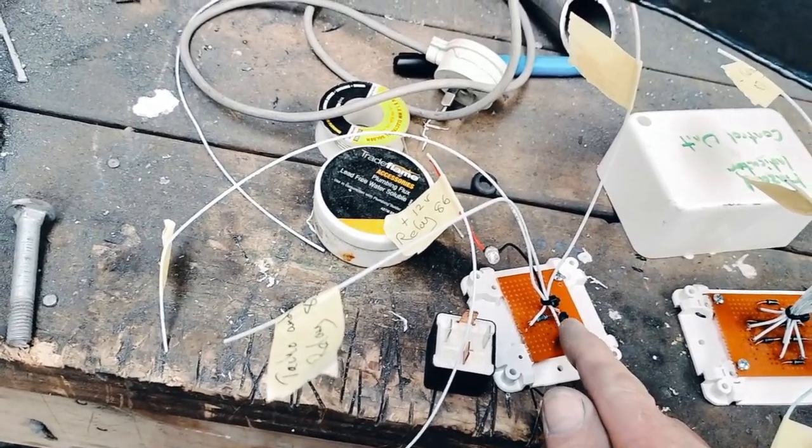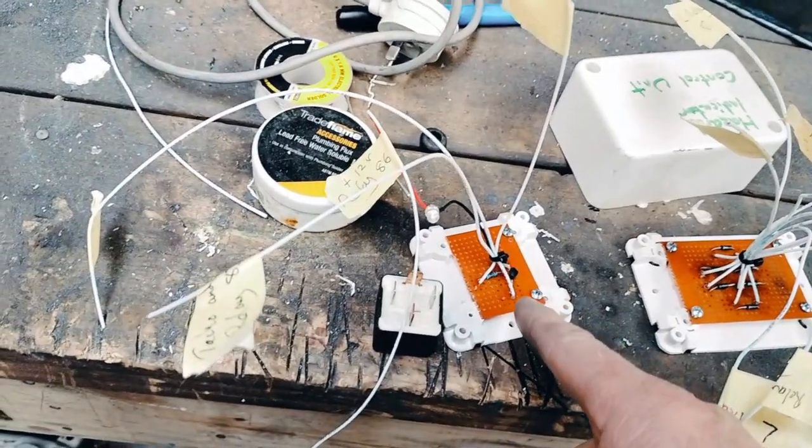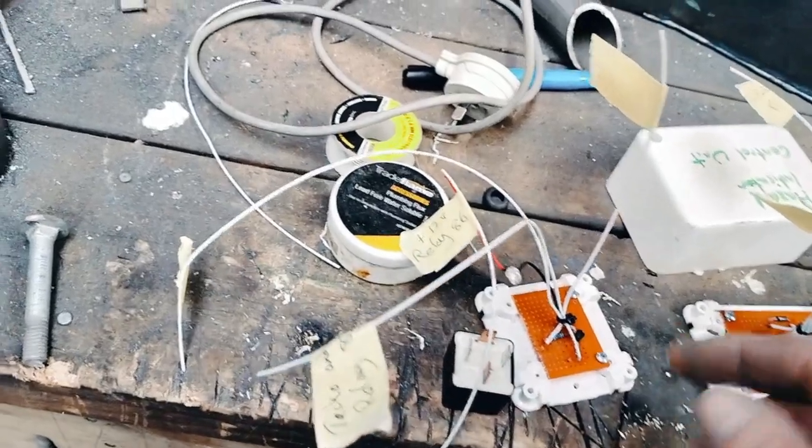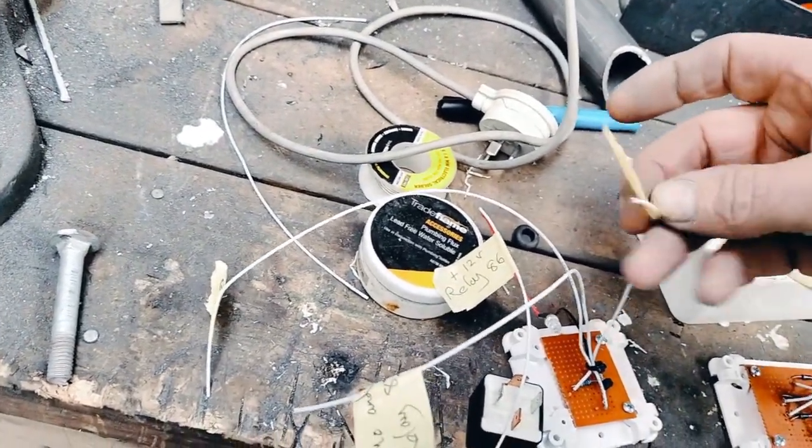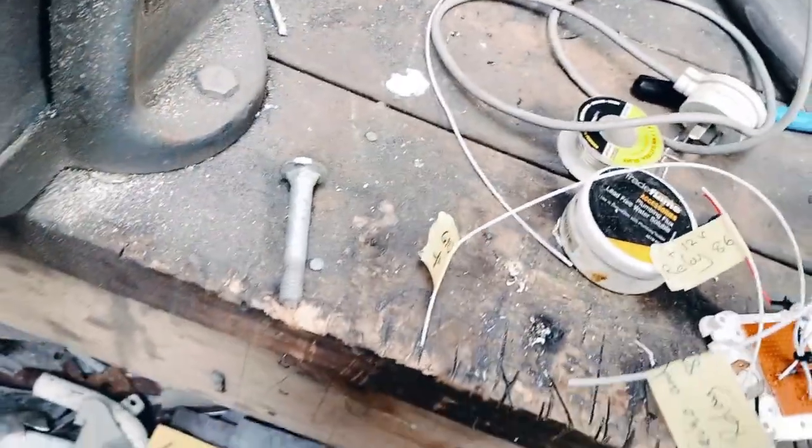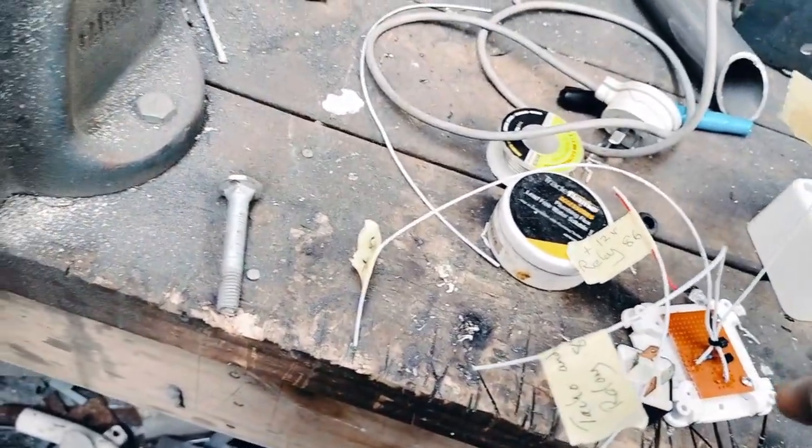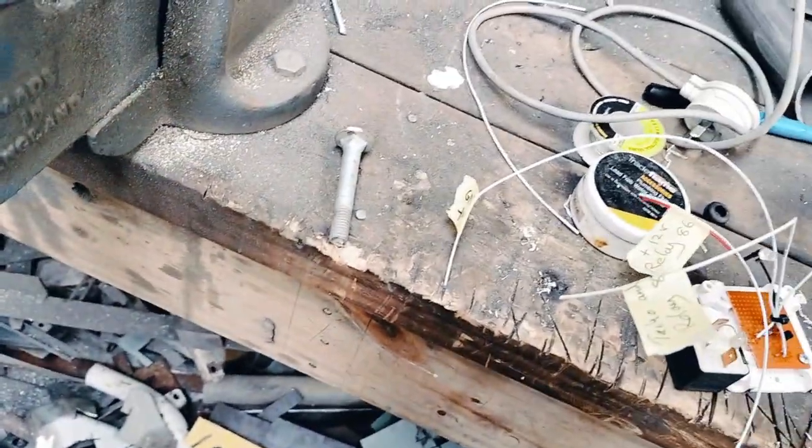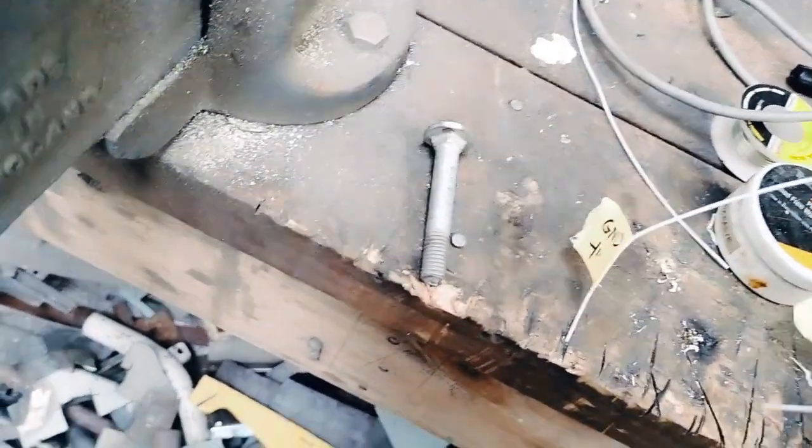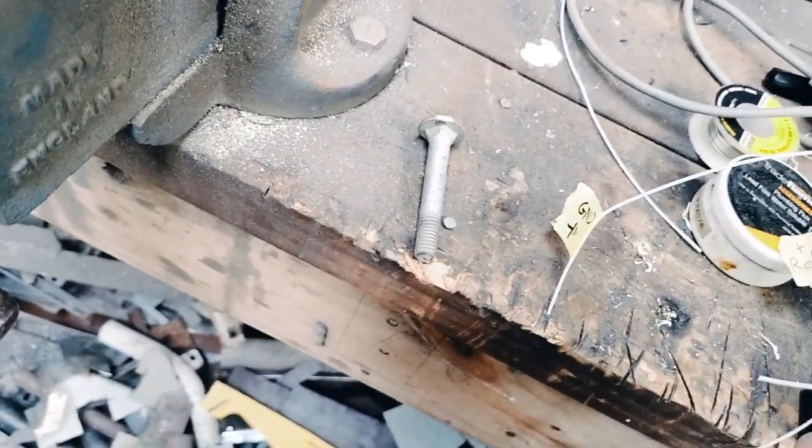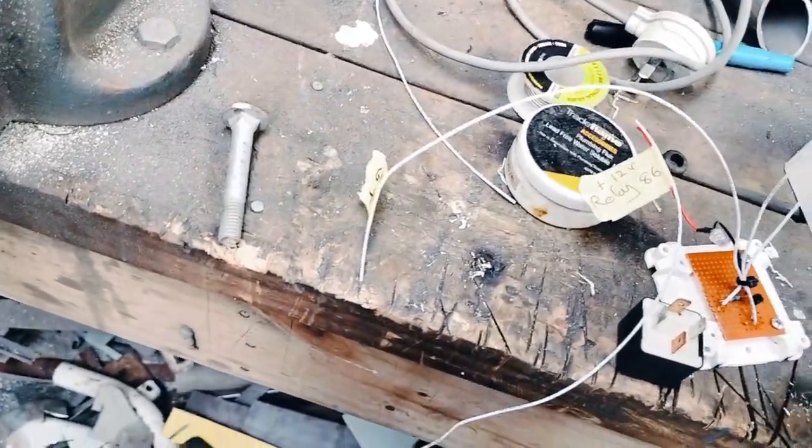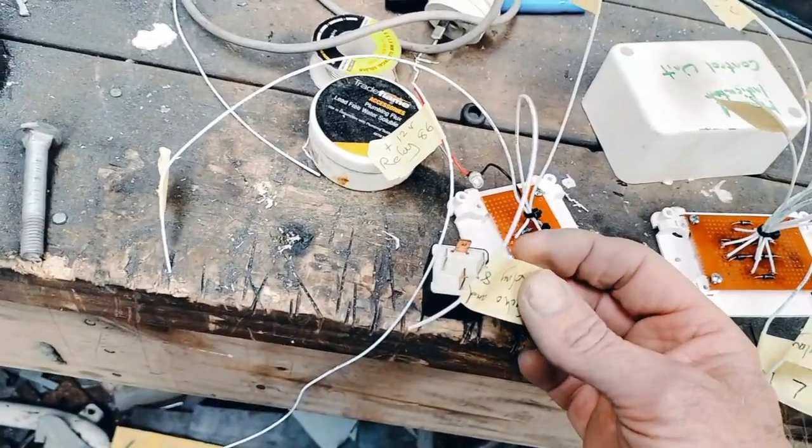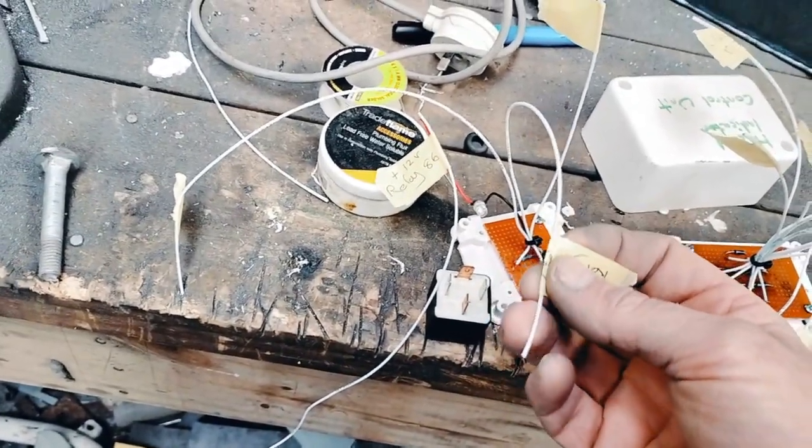That goes into one side of the transistor. No sorry, it goes through that resistor then into the transistor. Then on one side of the transistor you've got the other side of the relay, on the other you've got the one that goes off to the taco. This one here.